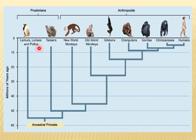Prosimians were primarily herbivorous and nocturnal and only few survive today. Anthropoids include New World monkeys, Old World monkeys, gibbons, orangutans, gorillas, chimpanzees, and humans.